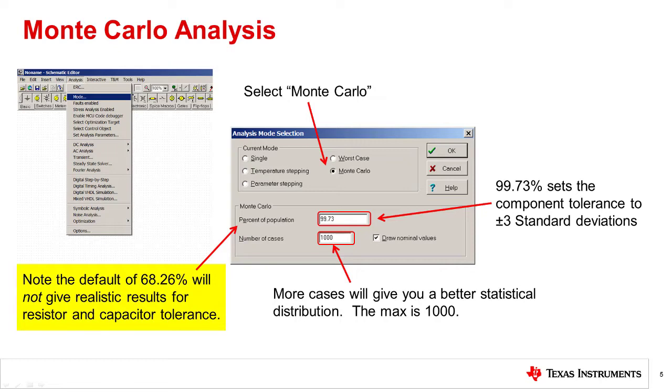Notice that the default of 68.26% corresponds to one standard deviation, and this is not practical for resistor and capacitor tolerances.